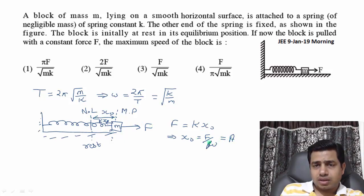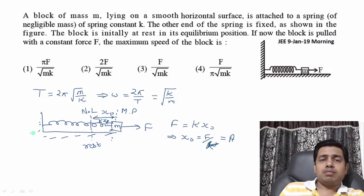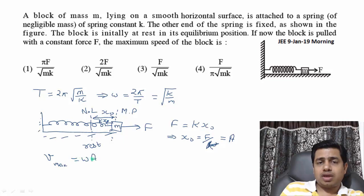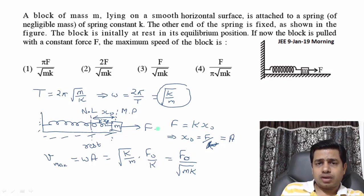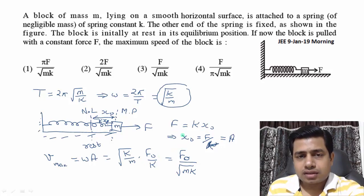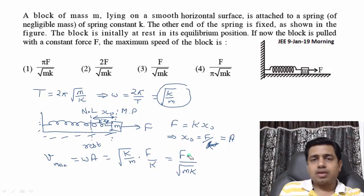x₀ which was F/k. I mistakenly wrote omega here. Now, the maximum speed in SHM equals ωa. What is omega equal to? We found it above. √(k/m). We found here that omega is √(k/m). And a is F/k. So maximum speed will be F/√(mk). I wrote it as F₀, but it's just F. So the answer is F/√(mk). The third option is the answer.